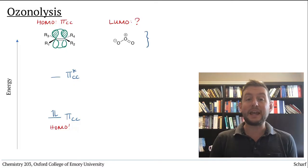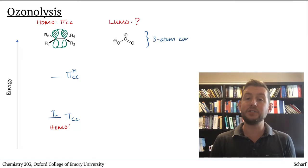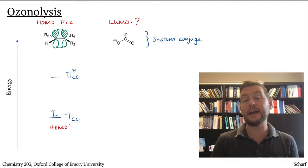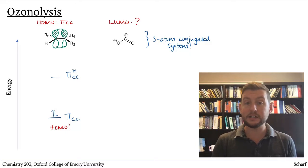Ozone, O3, is a three-atom, resonance-stabilized, conjugated system, just like the allyl anion. Each of the oxygen atoms is sp2 hybridized and has a p orbital that can participate in pi bonding with the other atoms.